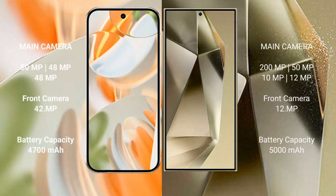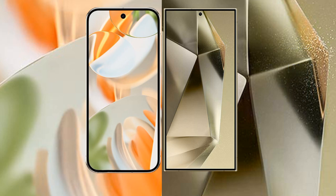Google Pixel 9 Pro features a triple rear camera setup: 50MP plus 48MP plus 48MP, with a 42MP front camera. Samsung Galaxy S24 Ultra features a quad rear camera setup: 200MP plus 50MP plus 10MP plus 12MP, with a 12MP front camera. Google Pixel 9 Pro has a 4,700mAh battery with 27-watt fast charging support. Samsung Galaxy S24 Ultra has a 5,000mAh battery with 45-watt fast charging support.